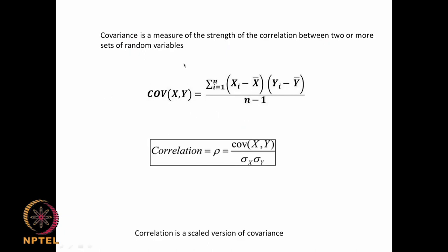Covariance is a measure of the strength of the correlation between two or more sets of random variables. If you have X and Y and want to find the covariance, you compute: summation from i=1 to n of (Xi minus X-bar) times (Yi minus Y-bar), divided by n minus 1. Here X-bar is the average of all the Xs, and Y-bar is the average of all the Ys.